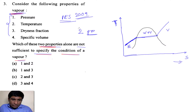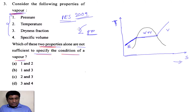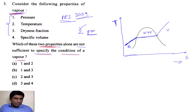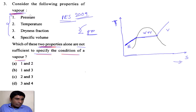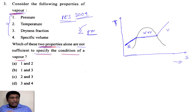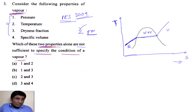So these two properties should be independent — that means there shouldn't be any change of one variable depending on the other. Here, what is being asked is: if you take any two properties out of these four, then those two properties may not be enough to identify the state of the fluid, especially for the vapour.